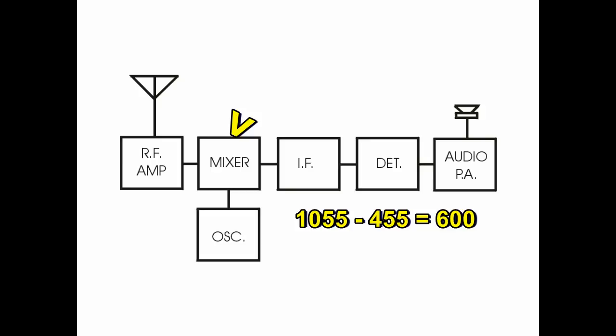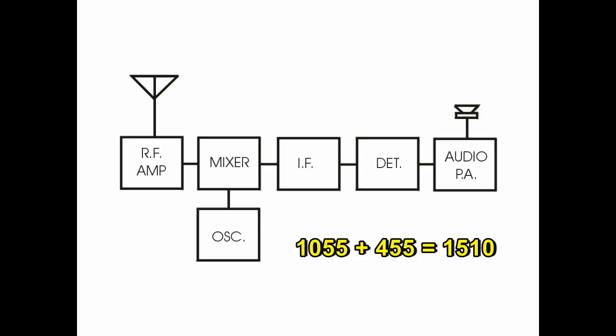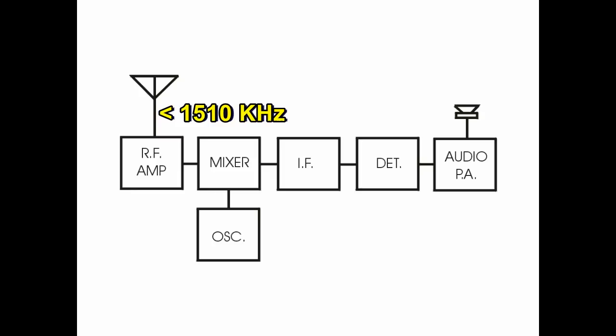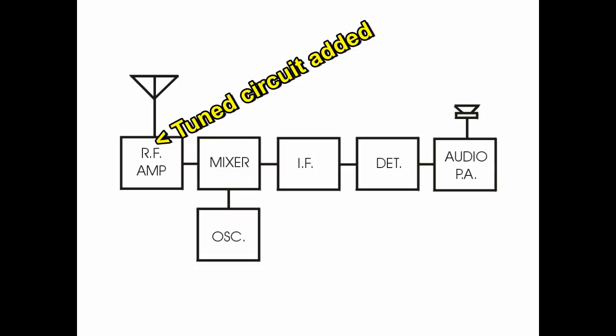Signals from the antenna and the local oscillator were fed to a mixer stage, which created additional signals at both the sum and difference frequencies. The problem was we wanted only the difference — in this case, 1055 minus 455, or 600 kHz. But what happens when we add 1055 to 455? Another station at 1510 kHz can also create a 455 kHz signal that passes right through the IF filters.